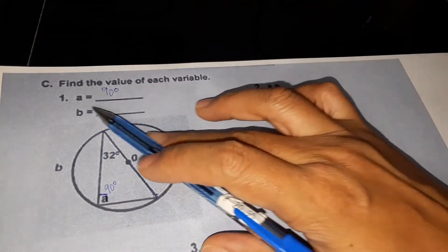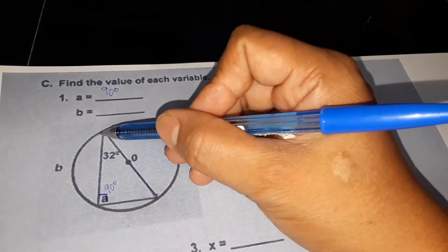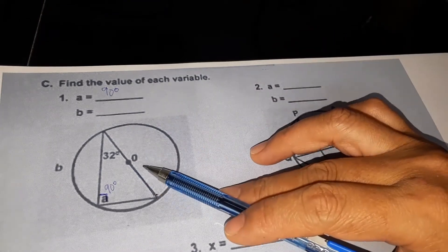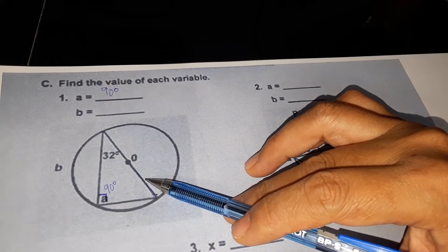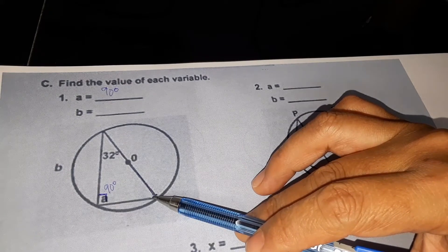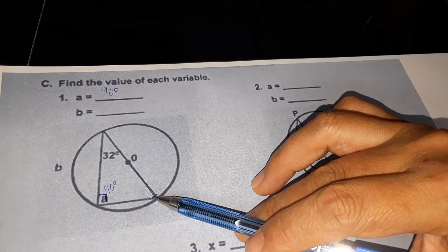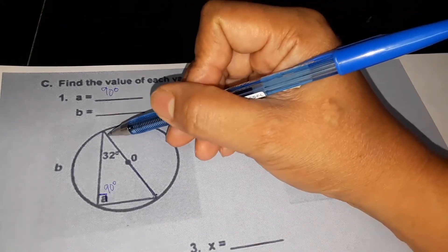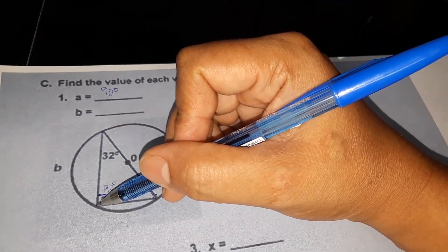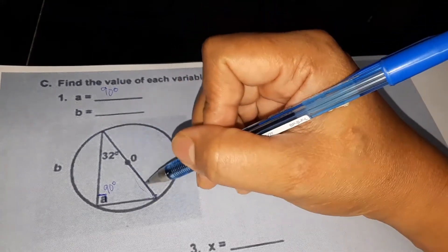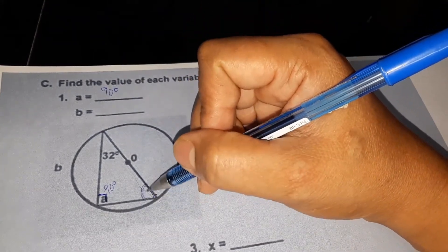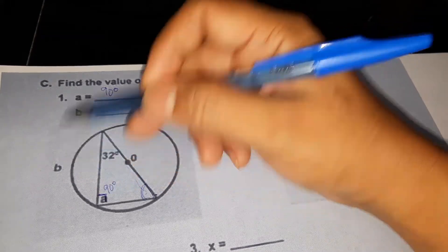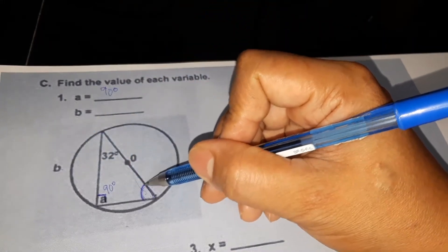Next, how about b? Remember that an inscribed angle is half the measure of its intercepted arc. This is our inscribed angle. We do not have the measurement of this angle yet, so to get the measurement of arc b, we need to get the measurement of this angle first.